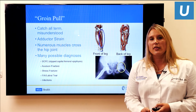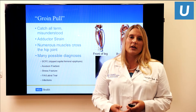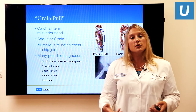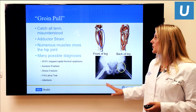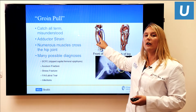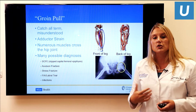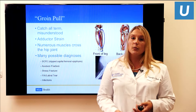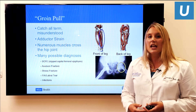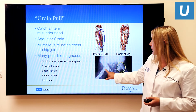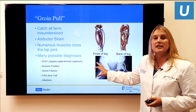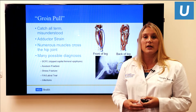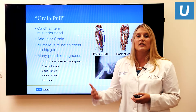Moving to the lower extremity, starting with the hip. Groin pulls are something we're learning a lot more about in pediatric sports medicine. A true groin pull is an adductor strain — the adductors are muscles on the inside portion of your leg that attach up to the pelvis. We now know this is actually pretty rare in kids, and there are numerous other diagnoses that are much more common. There are multiple muscles as well as growth plates in this area that can be affected, including a growth plate on the top part of the femur.